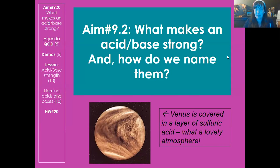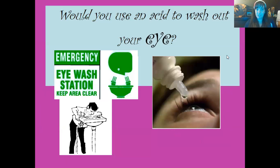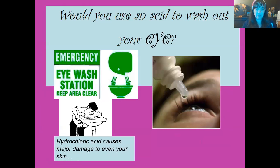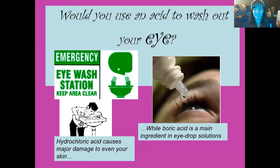Today's lesson is 9.2: what makes an acid or base strong, and how do we name them? Fun fact: the planet Venus is covered in a layer of sulfuric acid. Would you ever use an acid to wash out your eye? Of course not — if you got acid in your eye, you'd go to the eyewash station. Hydrochloric acid causes major damage even to your skin. And yet, the main ingredient in eye drop solutions is boric acid. So what's the difference? Why boric acid but not hydrochloric?